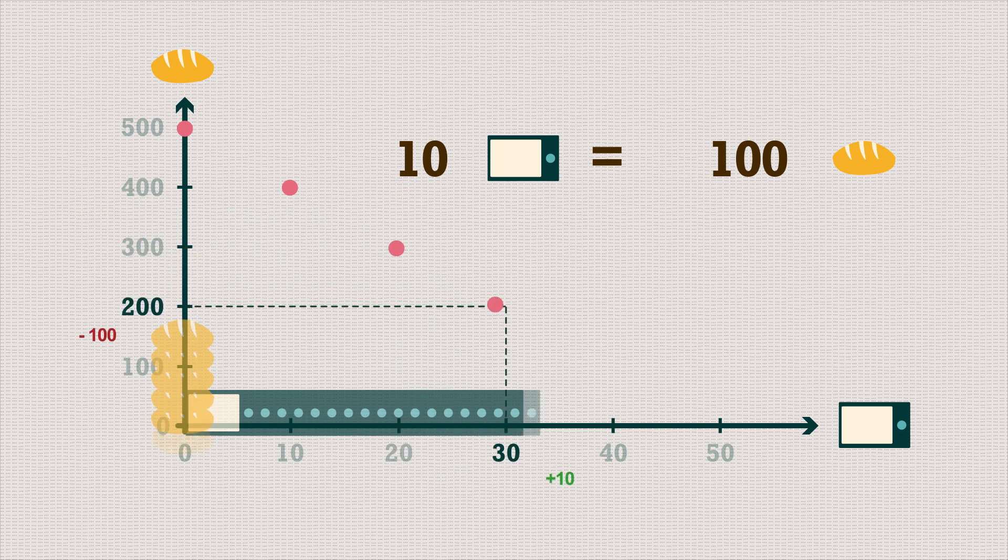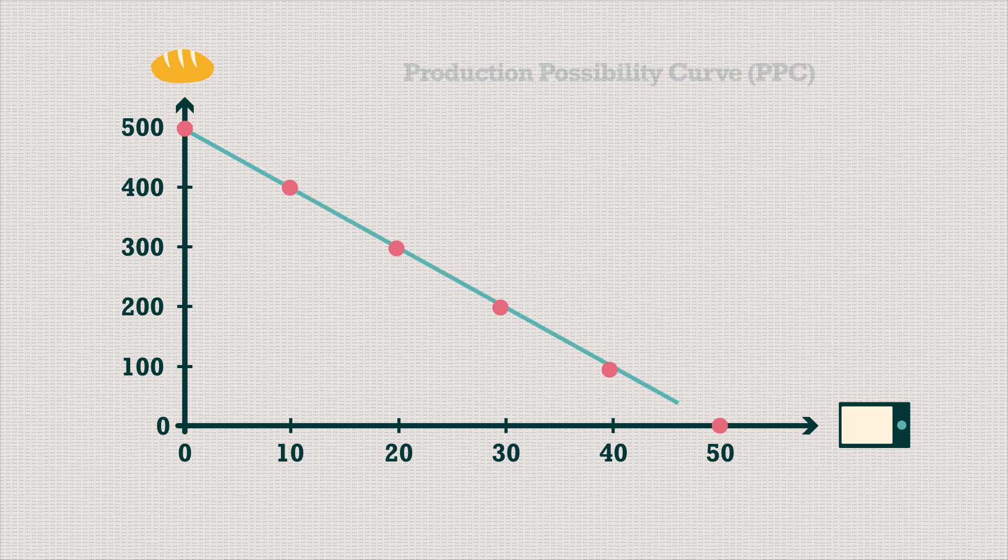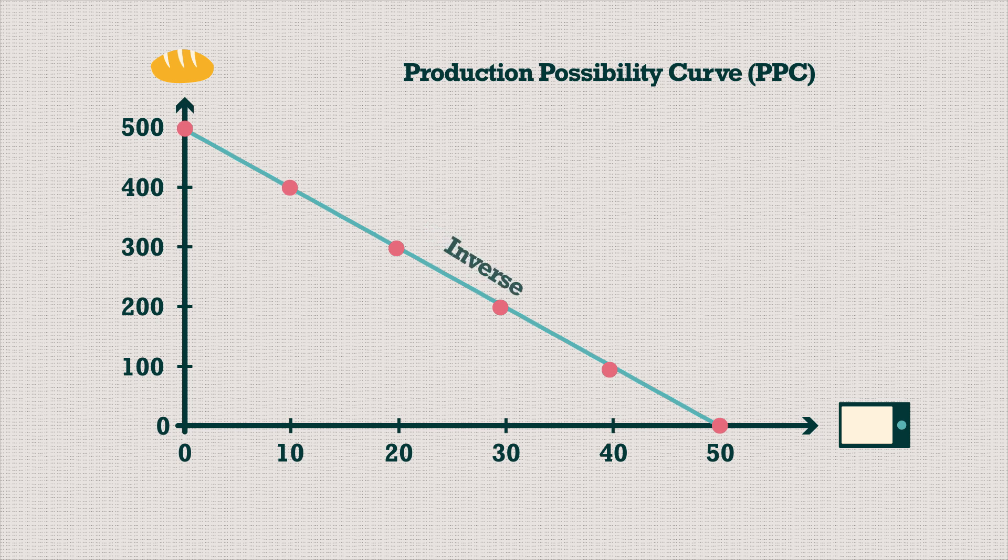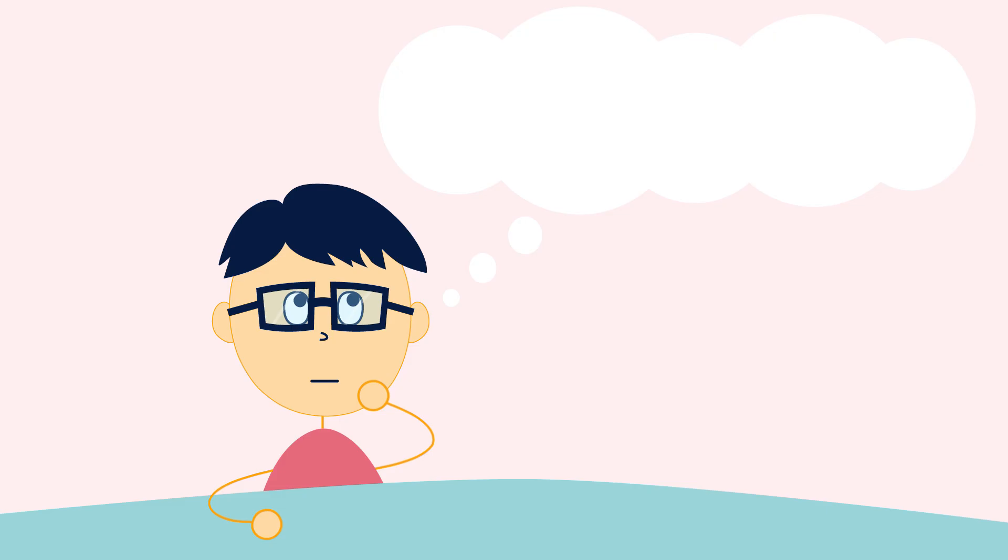And so on. This is the Production Possibility Curve or Frontier. That's an inverse relationship - as you produce more tablets, you produce less bread. Nothing is free. To produce 10 more tablets, does it mean that we have to give up 100 bread every single time?